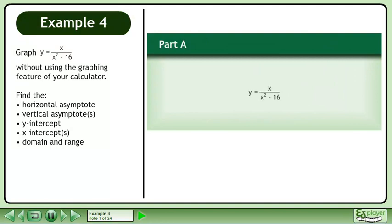Graph y equals x over x squared minus 16 without using the graphing feature of your calculator. To graph this, we will find the horizontal asymptote, vertical asymptotes, the y-intercept, x-intercepts, and the domain and range.